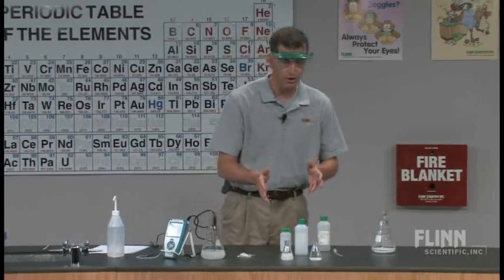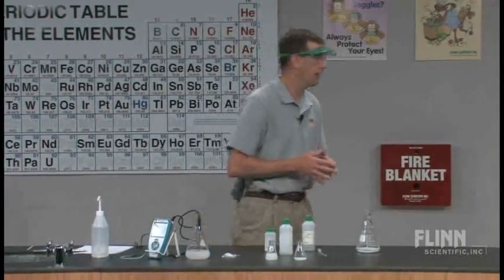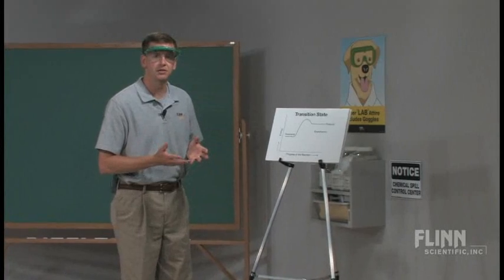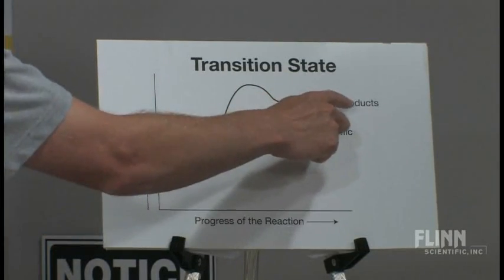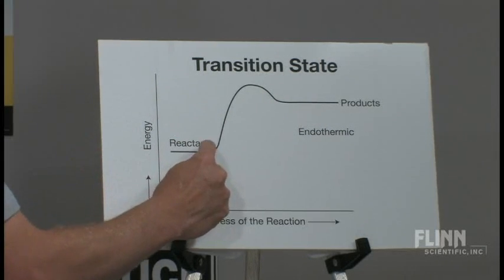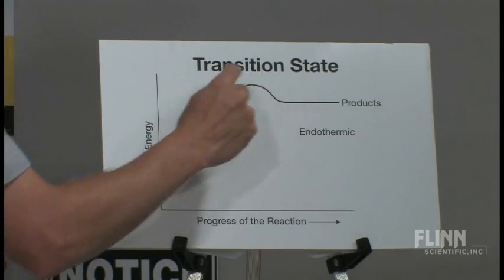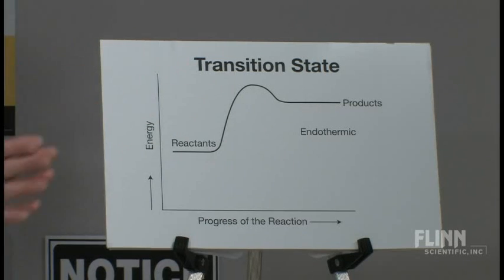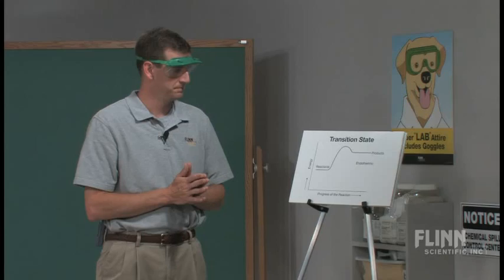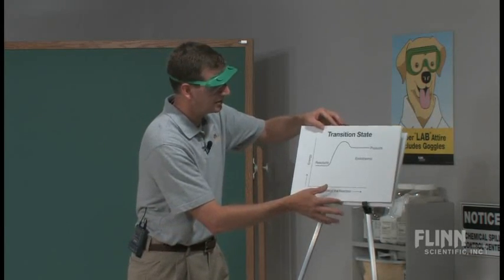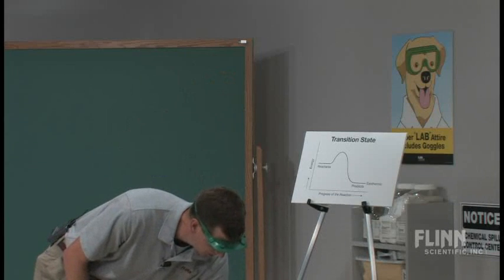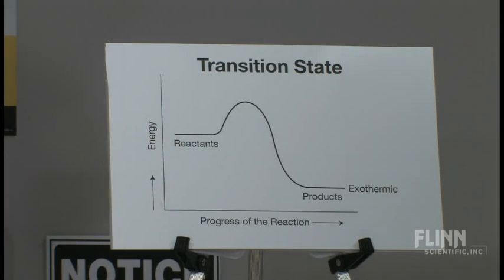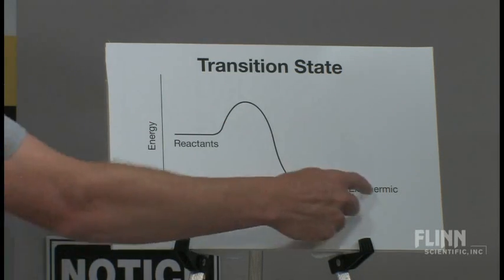What we want to do is take a look at the energy diagrams for an exothermic and endothermic reaction. What we need to get across to our students is that a reaction moves from reactants to products. As it moves from reactants, we have to have the activation energy — get over the curve — then move to products. If the products end up with more energy than the reactants, that's an endothermic reaction — we're putting energy into that, and the delta H is positive. If the products end up with less potential chemical energy than the reactants, delta H is negative — that's an exothermic reaction.